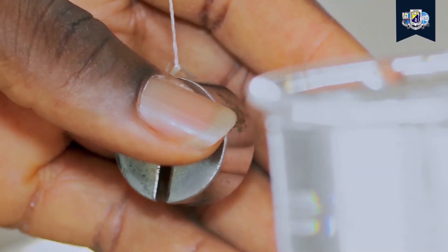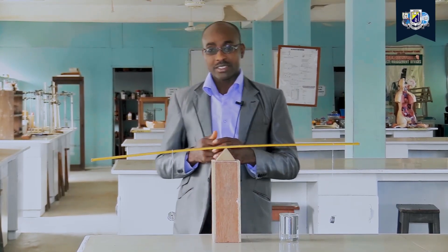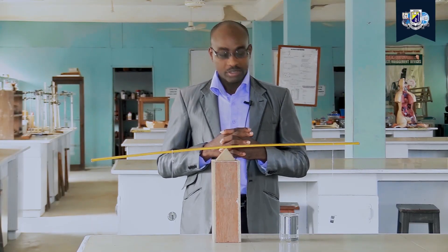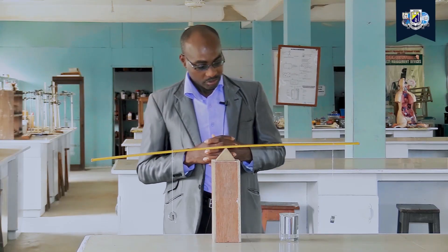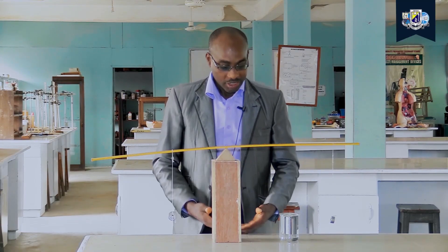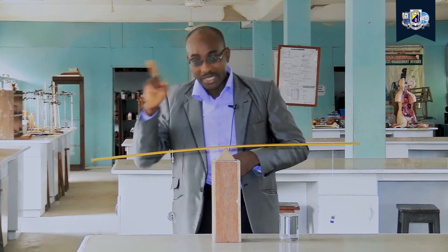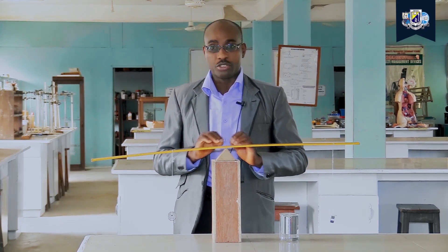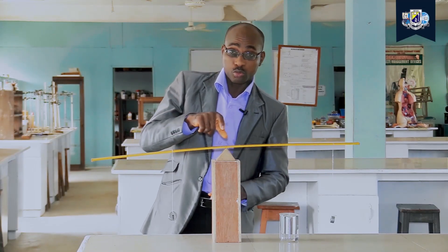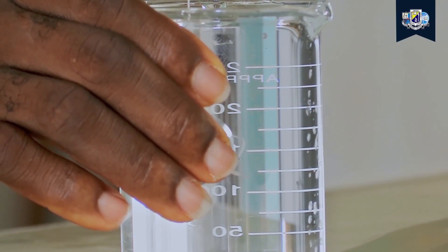Now, if we immerse the 50 gram mass in water, because of the upward force exerted by the water on it, its effective mass will no longer be 50 grams — it will reduce. This we know from Archimedes' principle, which states that when a body is partially or completely immersed in a fluid, it experiences an upthrust equal to the weight of the fluid displaced. Because of this upthrust the weight of the body reduces, so the balance point will shift.